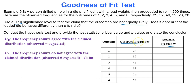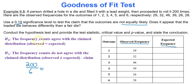The way to set up this test: if the die were indeed fair, every outcome should occur the same number of times out of 200 rolls. What's 200 divided by 6, rounded to the nearest whole number? It's about 33. So everything should have an expected frequency of 33 if the die were fair.